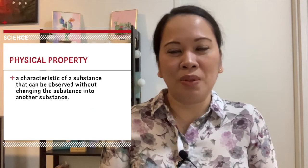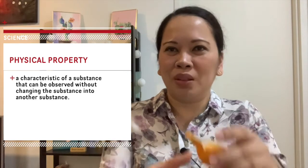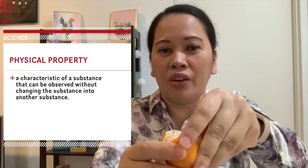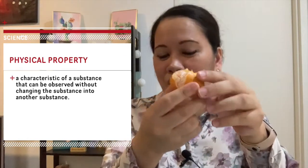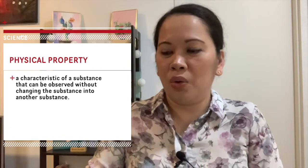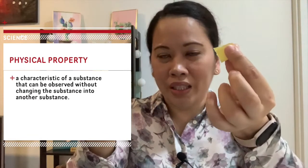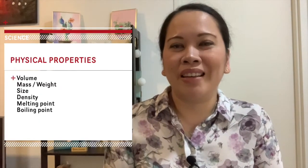When we talk about physical properties, this is a characteristic of a substance that can be observed without changing the substance into another form. For example, this orange — if I peel it and take out the orange inside, it would still be an orange. Another example: if I tear this paper in half or quarter, it would still be a paper. That is a physical property.